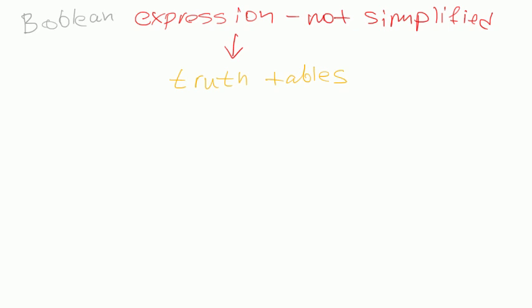So mostly you create truth tables in order to afterwards, not mostly, I don't know, it depends. But very often when you want to simplify an expression, you most likely create a truth table before performing Karnaugh map technique on it. So then you create a truth table out of this not simplified expression.